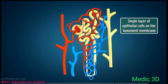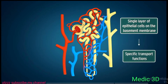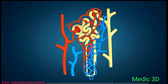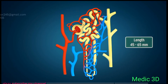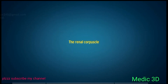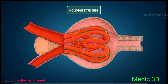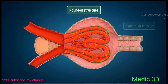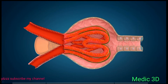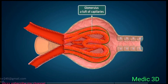Each nephron segment is made up of a single layer of epithelial cells on the basement membrane, modified to perform specific transport functions. The nephron's total length varies between 45 and 65 mm. The renal corpuscle is a rounded structure comprising a glomerulus surrounded by a glomerular capsule.